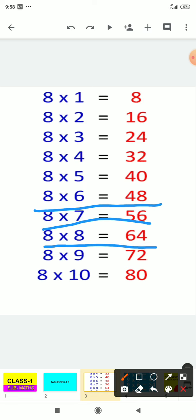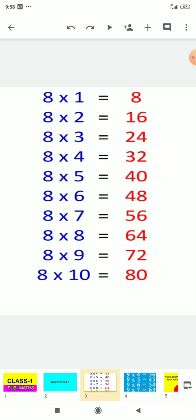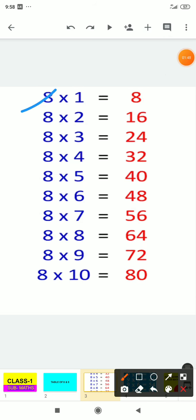8 times 8 is 64, 8 times 9 is 72, 8 times 10 is 80. We will read it again, okay, ready. 8 times 1 is 8, 8 times 2 is 16.